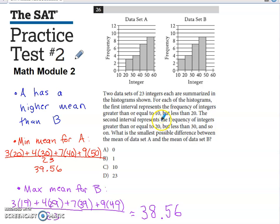The next interval represents the frequency of integers greater than or equal to 20, but less than 30. So on this stretch of the x-axis, the bar that sits here, we include 20, but we do not include 30.